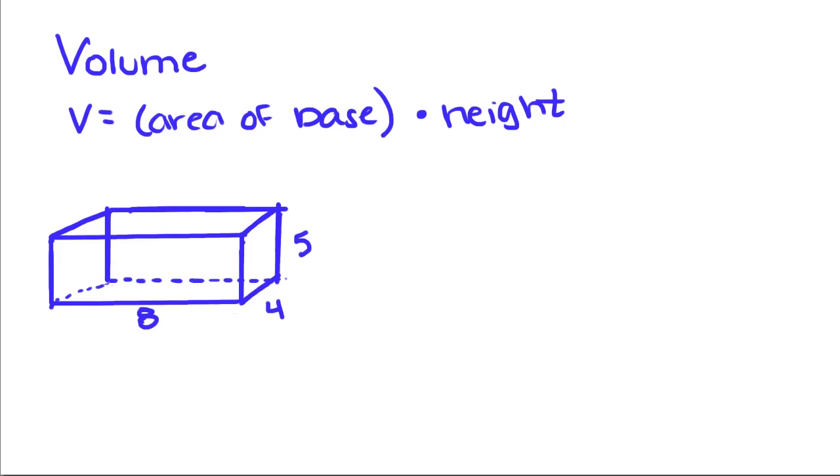So first, volume is equal to area of the base times your height. So for this, this is a rectangular prism. The base for us is this square right here. But since we multiply everything together, it doesn't really matter what order you multiply in because if you remember, multiplication is commutative, which means you can do it in any order you want. So we're going to do the area of the base, which is 5 times 4 times your perpendicular height.